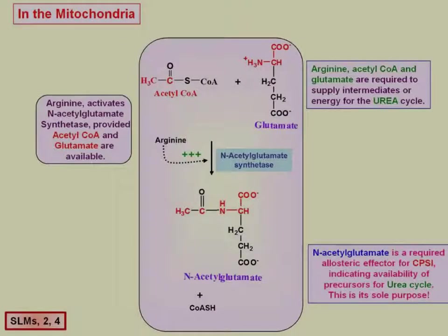CPS1 is a mitochondrial enzyme, so the first step takes place in the mitochondria. The incorporation of ammonia with bicarbonate occurs in the mitochondria, and the production of N-acetylglutamate also occurs in the mitochondria. NAG is formed by combining acetyl-CoA and glutamate through N-acetylglutamate synthetase.